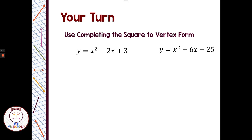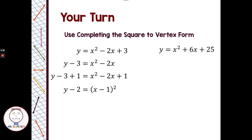Welcome back. So on that first one, we want to subtract 3 from each side. Then we want to complete the square by adding 1 to each side. The factored form on the right side — x squared minus 2x plus 1 — factors as x minus 1 quantity squared. When I added 1 to the left side, negative 3 plus 1 is negative 2. Then the last step is to add 2 to each side, and we're in vertex form.